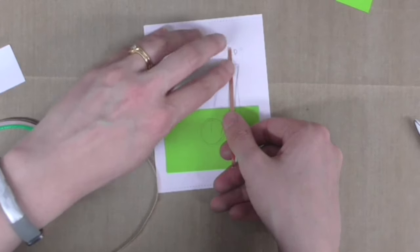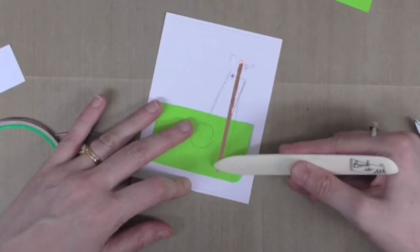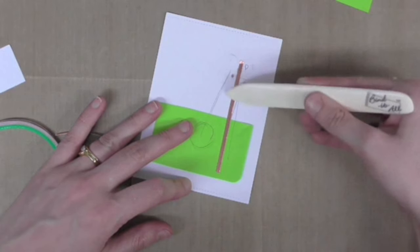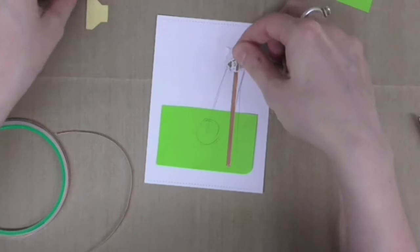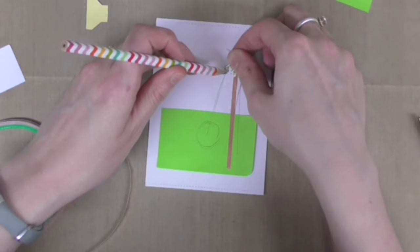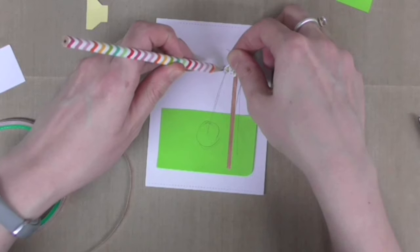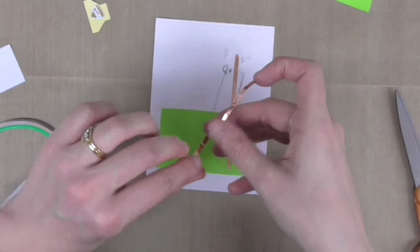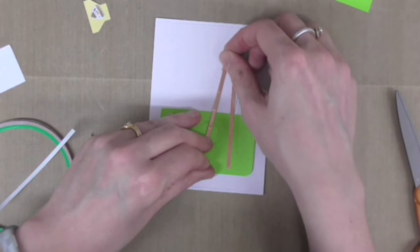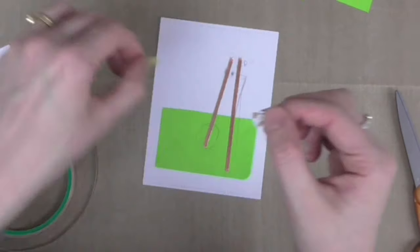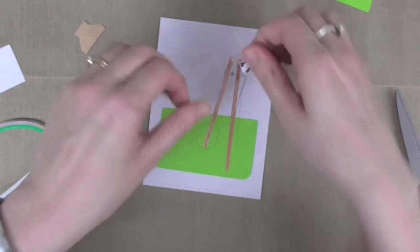So this is the copper tape that you get with Chibitronix. I'm just going to stick it down, and I like to burnish it with a bone folding tool just to make sure once again that it's stuck nicely. I tend to mark onto the card the little corner where my LED will sit because the first time I did this, I put my copper strips too far apart and I had to move them.